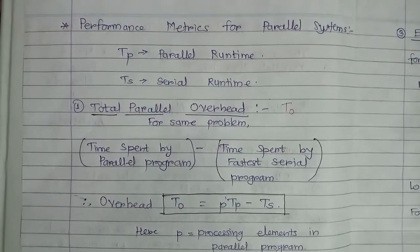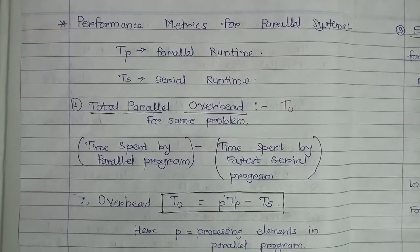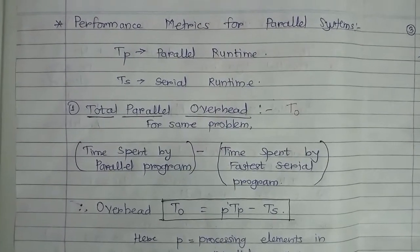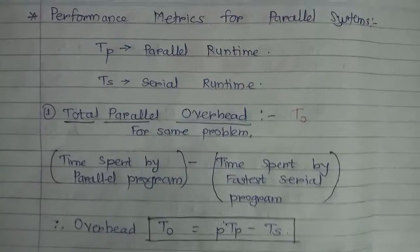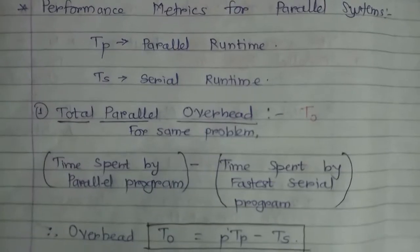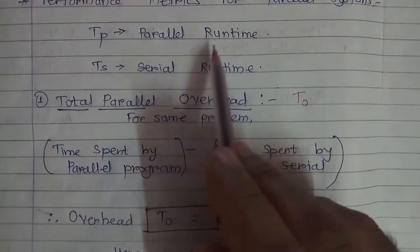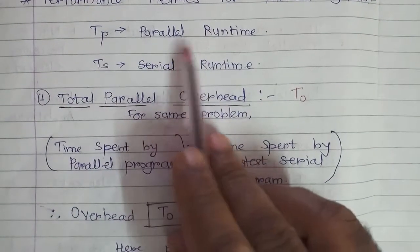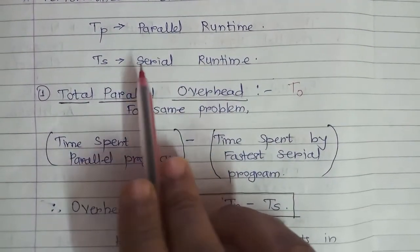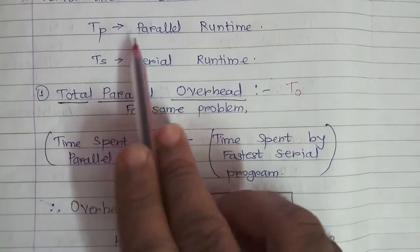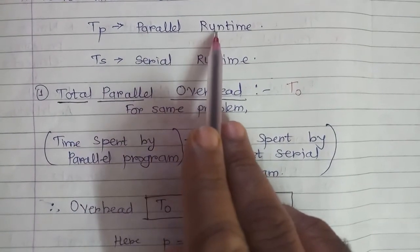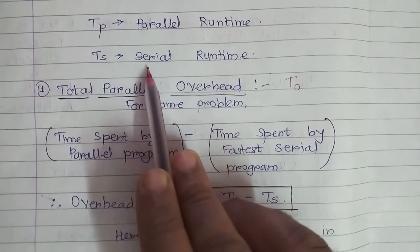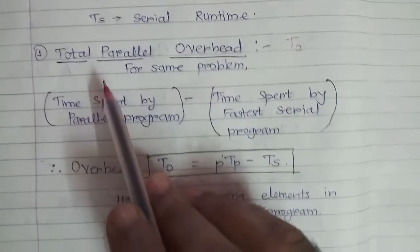Welcome friends. In this video we are going to study performance metrics for parallel systems, or we are going to analyze the performance of parallel algorithms. Two important notations are: Tp is equal to parallel runtime, and Ts is equal to serial runtime. Time required for a parallel program is Tp, and time required for a serial program is Ts. We always compare parallel programs or algorithms with the best serial algorithm.